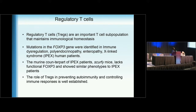Regulatory T-cells are an important T-cell subpopulation that maintain immunological homeostasis. The importance of this population has been studied starting in the 1970s. The first subpopulation is a CD4-positive, CD25-positive, FOXP3-positive T-cell population. Mutations in the FOXP3 gene were identified in human IPEX patients, and the mirroring counterpart, scurfy mice, lacks FOXP3 function and shows a similar phenotype. The role of Tregs in preventing autoimmunity and controlling immune responses is very well established.